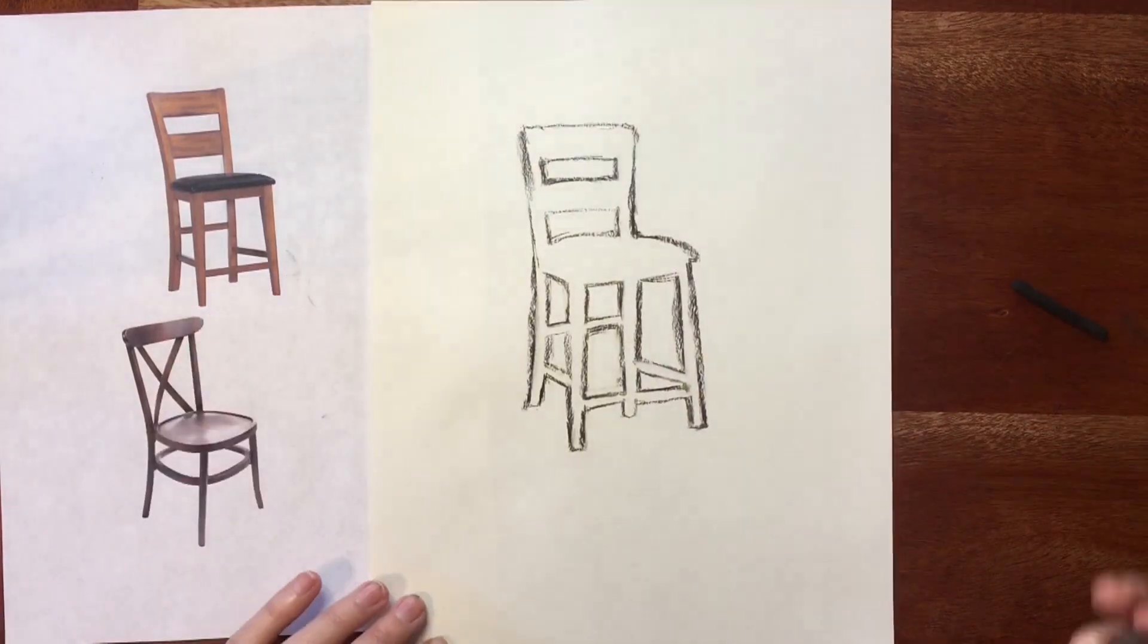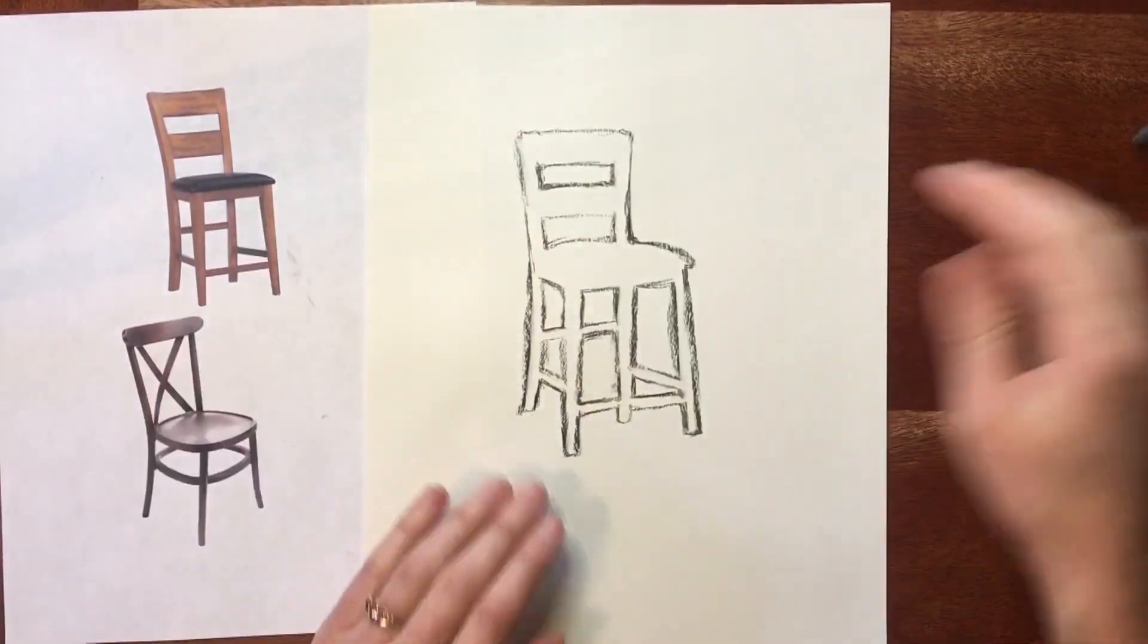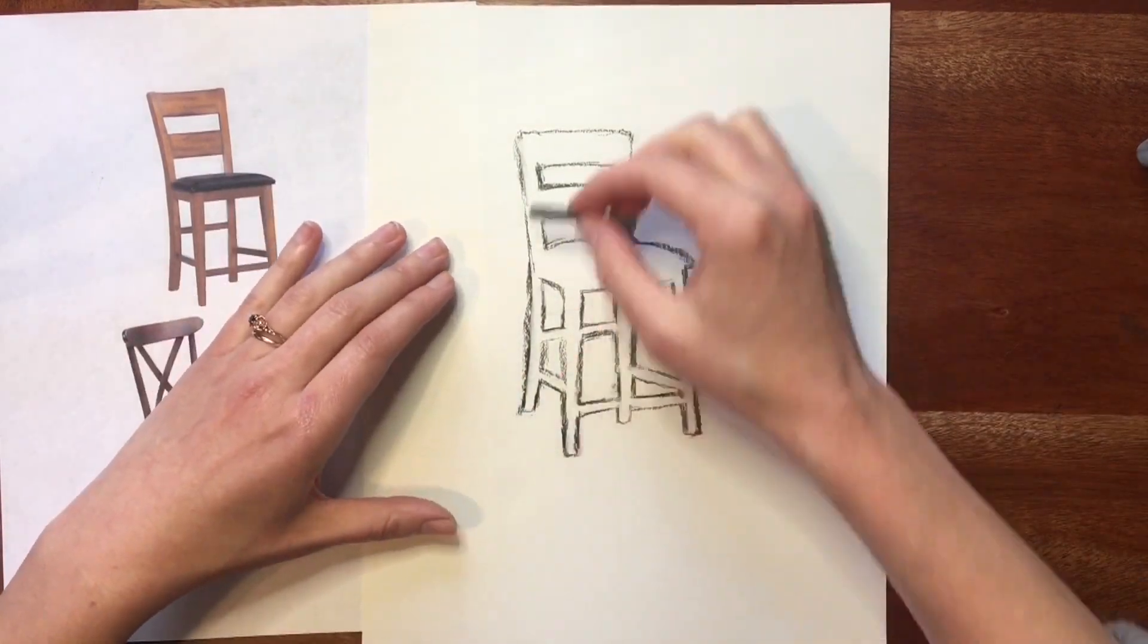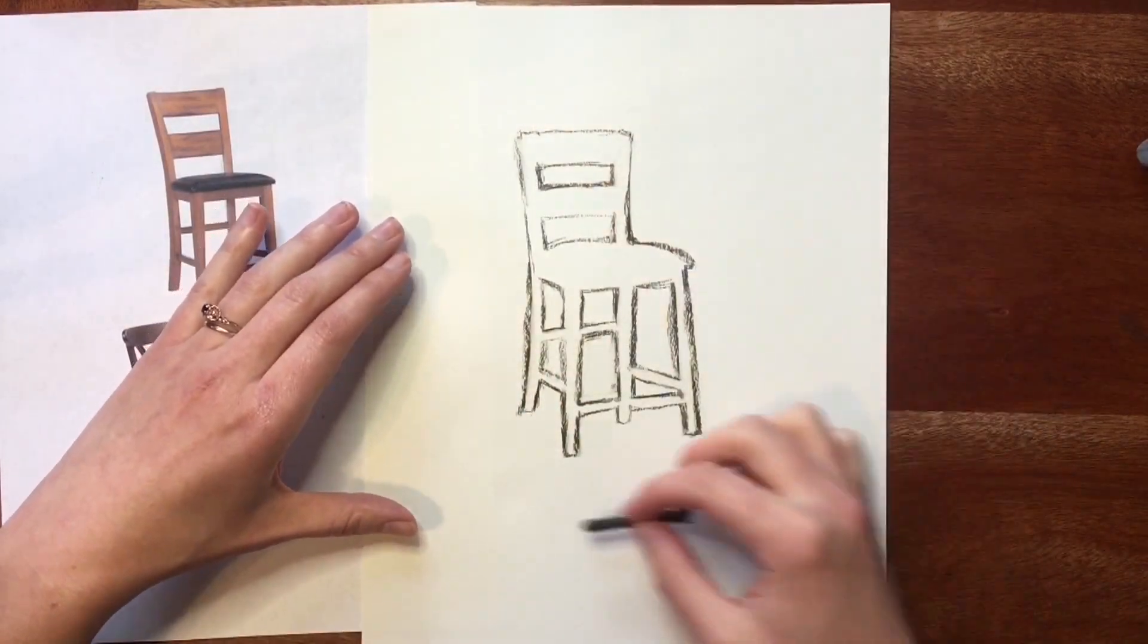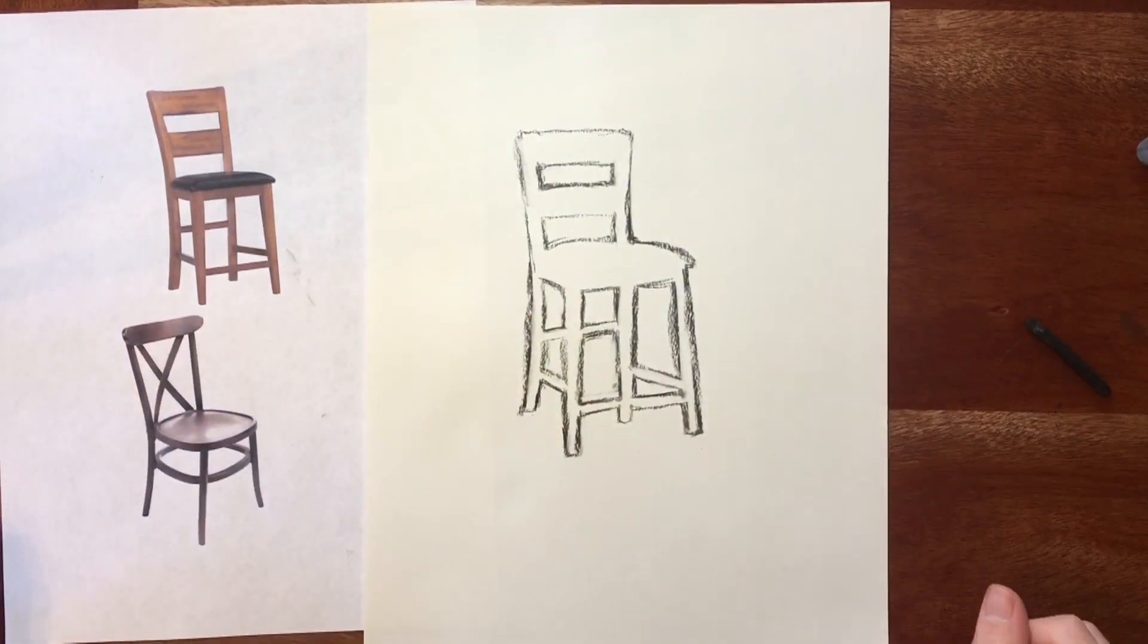So the last thing I think you can do if you would like is to fill in all of this negative space as well as a portion of the space around the chair.